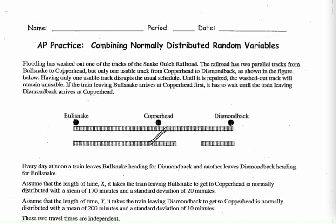Many people successfully completed our quiz in this unit dealing with a random variable that is discrete — defined by listing outcomes and probabilities in a table. We've recently dealt with binomial random variables, so this is a good question to review how to deal with normally distributed random variables.